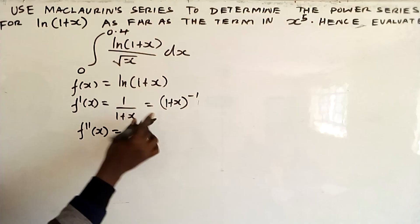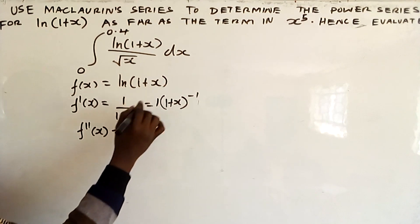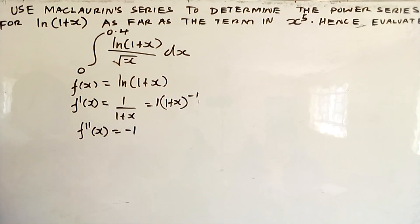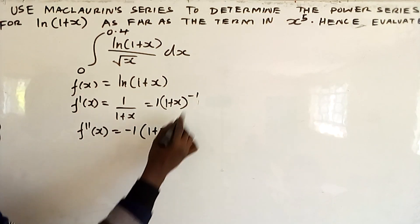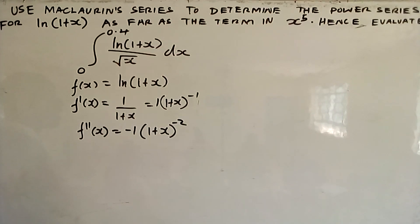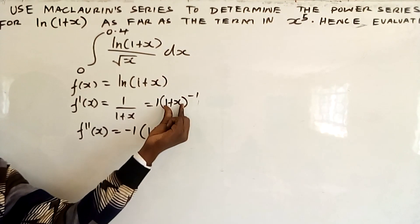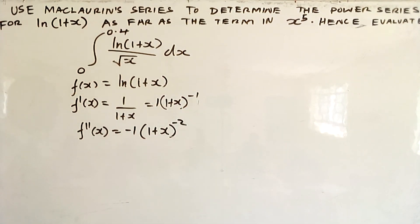Differentiating for the second time: you start with the power negative 1 times the coefficient 1, giving negative 1. Then (1+x) with the power reduced by 1 becomes negative 2. If you differentiate the inner function (1+x), you just get 1, so it remains the way it is.